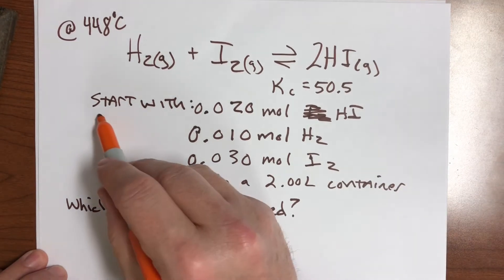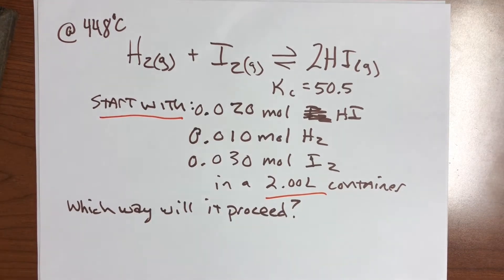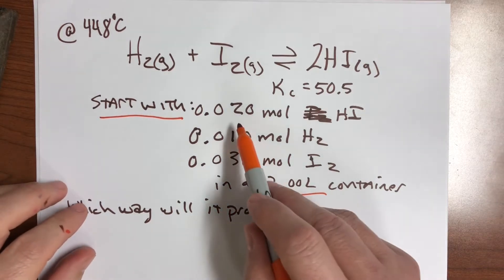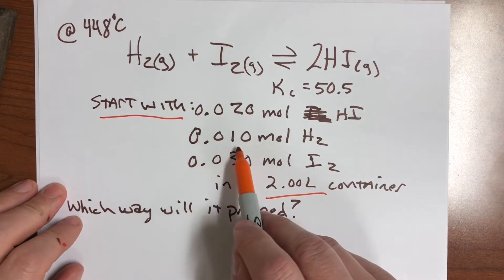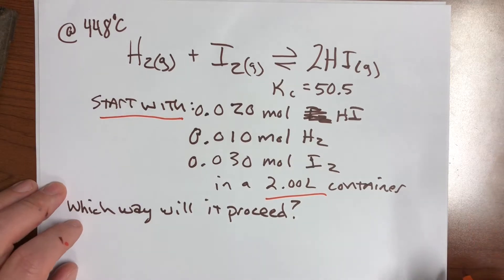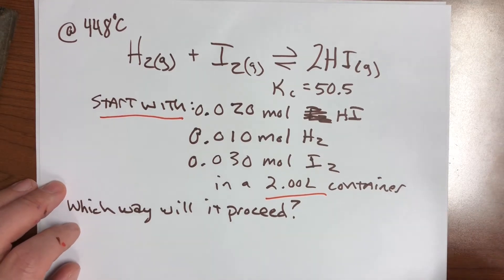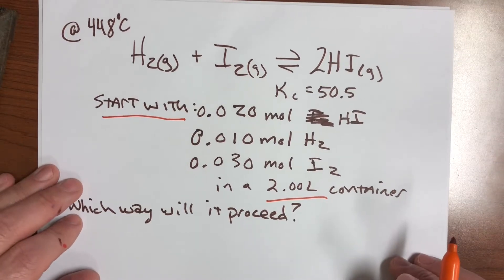So here's what we're going to start with. We're going to start with a jar, a two liter container, and we're going to charge this container with 0.02 moles of HI, 0.01 moles of H2, and 0.03 moles of I2.